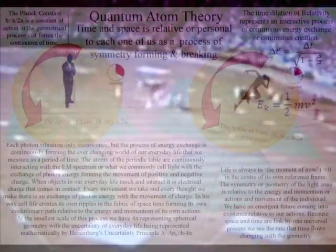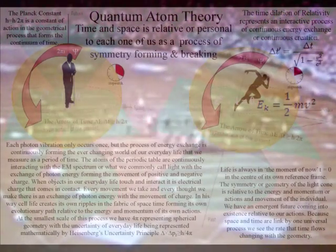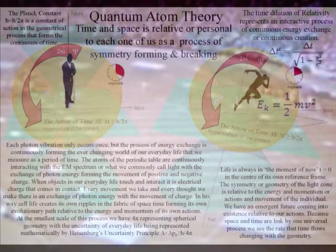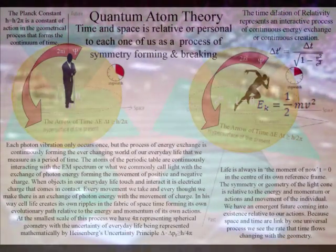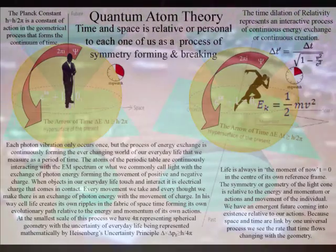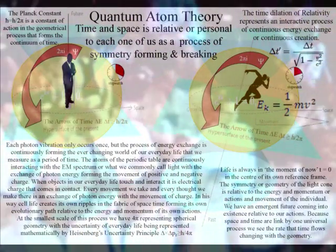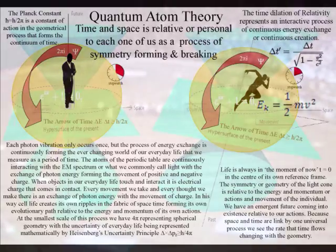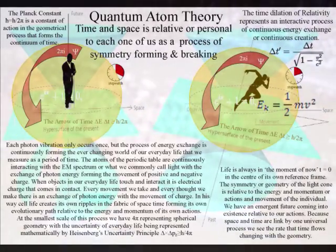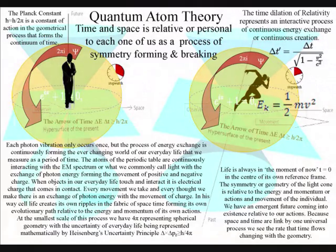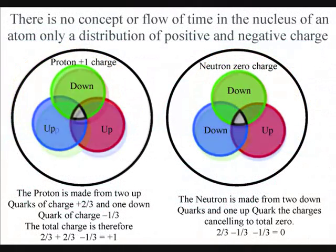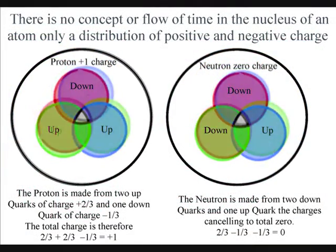The reason why it is so difficult to have an objective understanding of quantum mechanics is because we are within the process that forms the continuum of time. As an interactive part of the process, there is no time in the subatomic world — within the atoms, only the movement of part charge or fractions of charge.